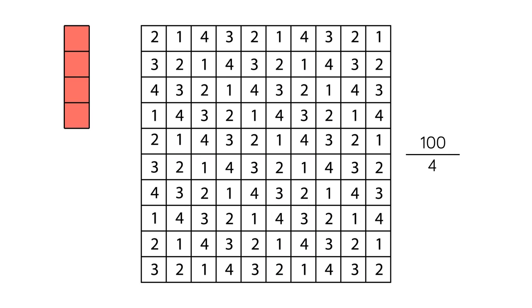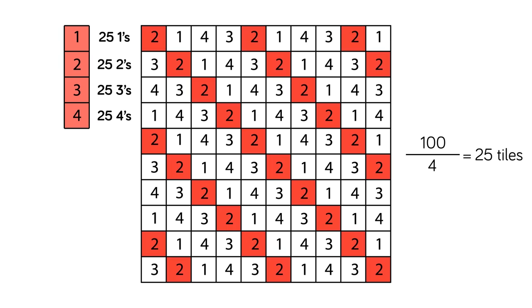Since there are 100 squares here, that means we need 25 tiles to cover everything, thus 25 1s, 25 2s, 25 3s, and 25 4s would need to be covered. But if we count everything up, there's not 25 of each number. For example, there are 26 2s, and that would require 26 tiles, which would be too much to fit on this grid, thus the original problem is impossible.